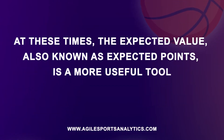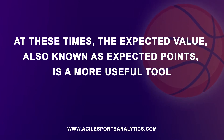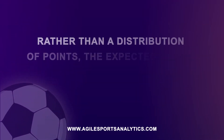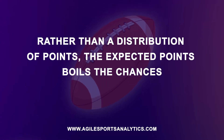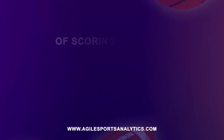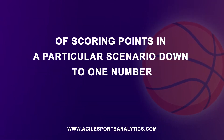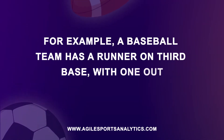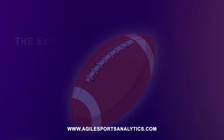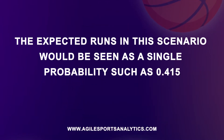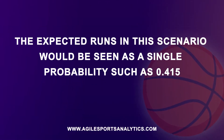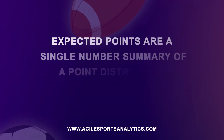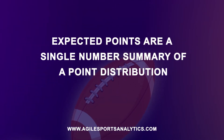At these times, the expected value, also known as expected points, is a more useful tool. Rather than a distribution of points, the expected points boils the chances of scoring points in a particular scenario down to one number. For example, a baseball team has a runner on third base with one out. The expected runs in this scenario would be seen as a single probability, such as .415. Expected points are a single number summary of a point distribution.